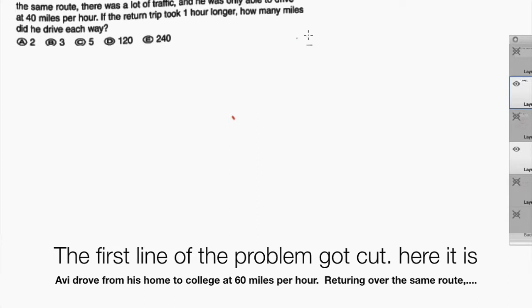If the return trip took one hour longer, how many miles did he drive each way? Let's represent this information graphically. He was going from home to college, and then from college back to home. On the journey from home to college, he was able to drive at 60 miles per hour. However, coming back from college to home only at 40 miles per hour.